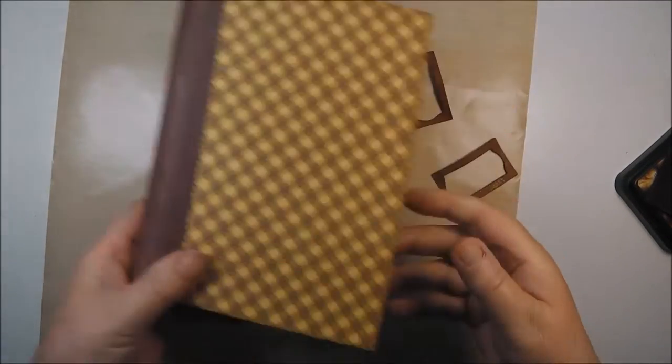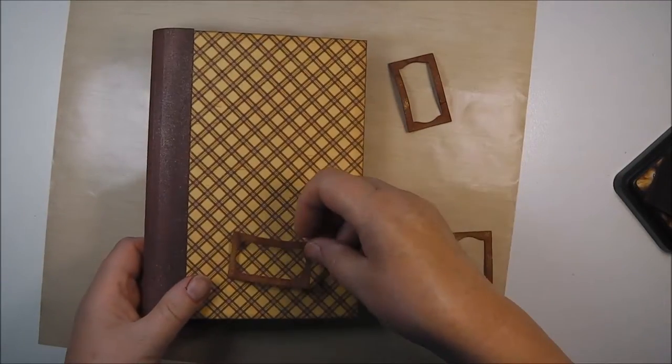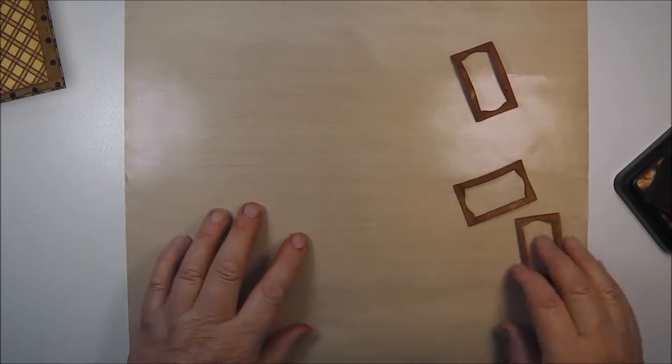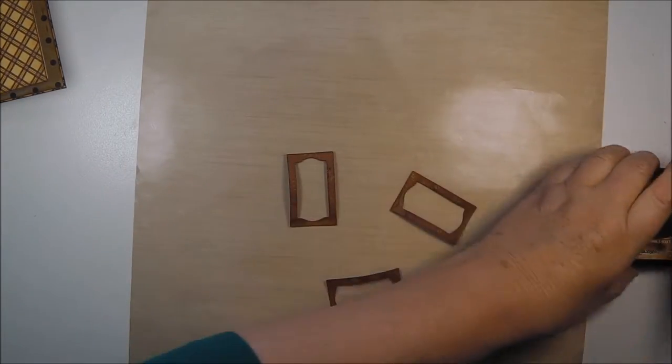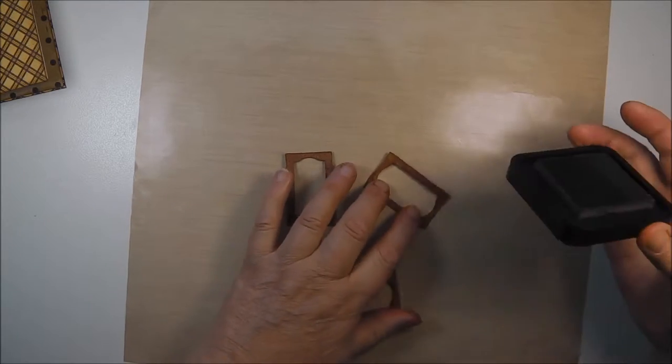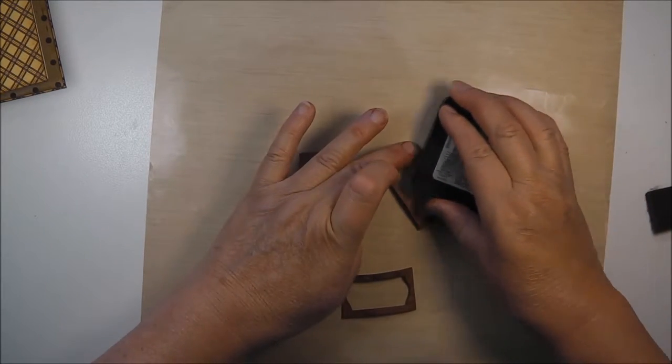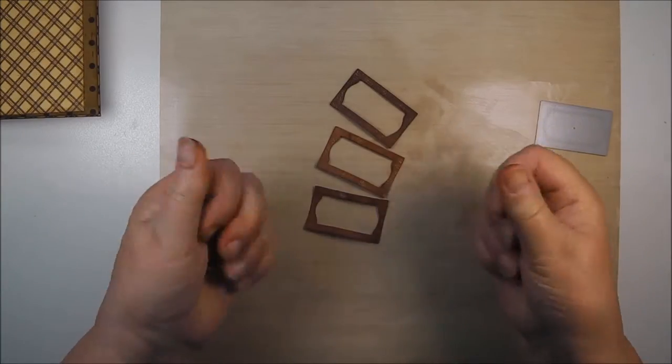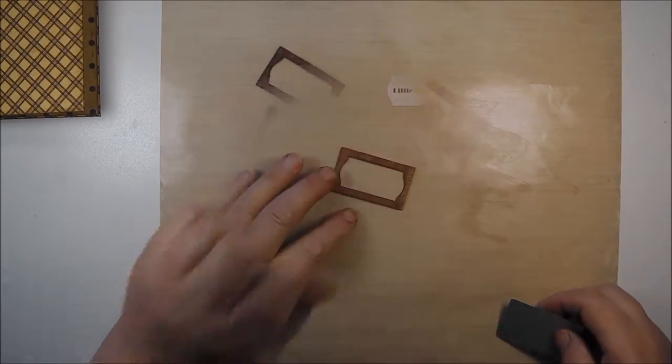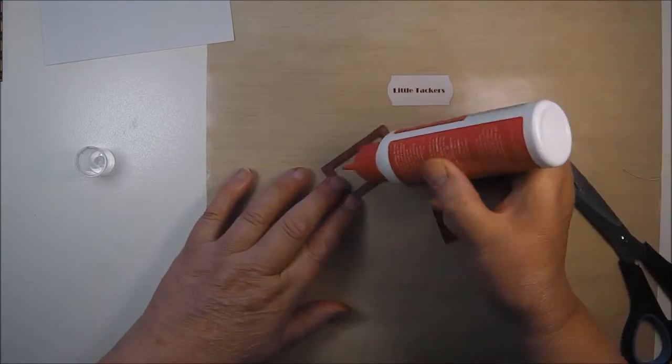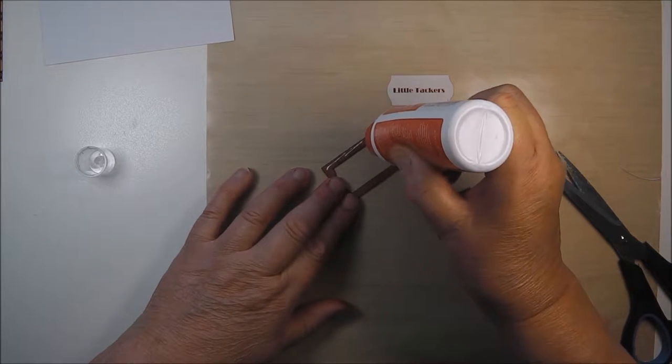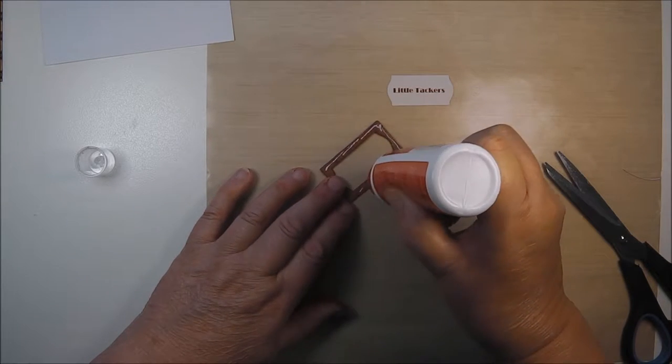Let that dry while I put together the frame. Again cut out of the colored grunge paper. The top layer I'm just adding a little more of the walnut stain distress ink, as I did with the spine cover.